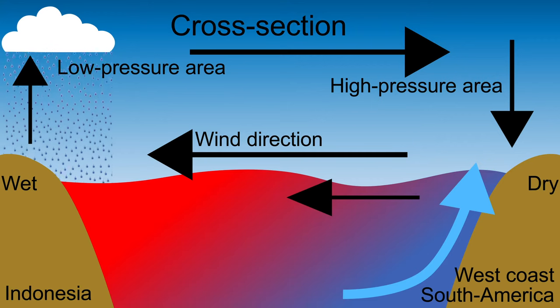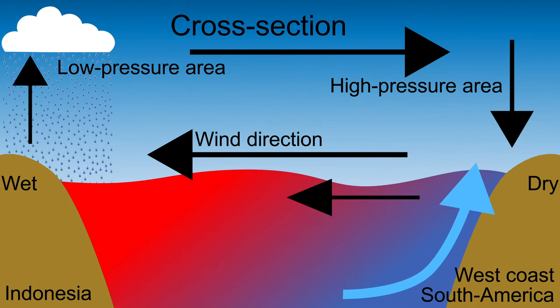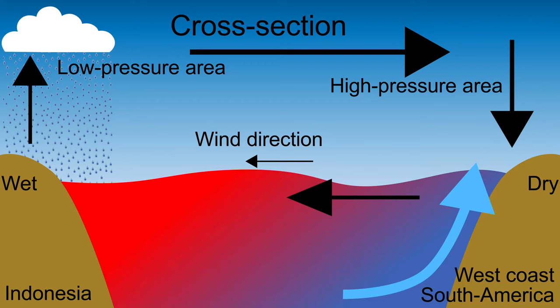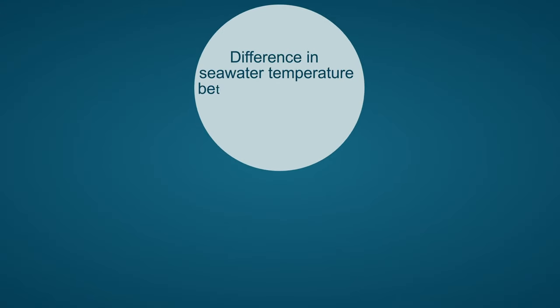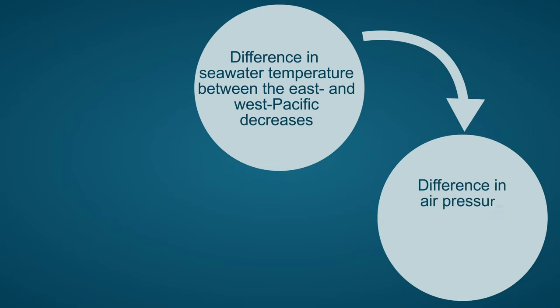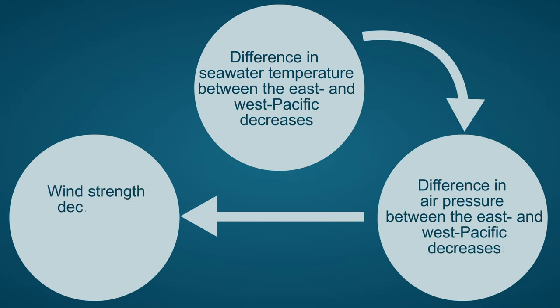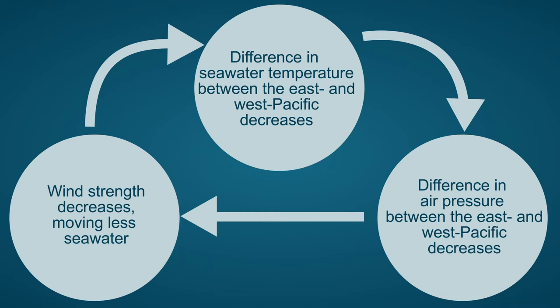Wind, air pressure and the temperature of the seawater reinforce each other. Suppose the wind decreases in strength. As a result, less warm seawater is blown towards the west, and less cold ocean water rises in the eastern Pacific Ocean, making it less cold. The difference in temperature between the western and eastern parts of the ocean decreases. Because warm seawater creates low pressure and cold seawater creates high pressure, the difference in air pressure also decreases, so the wind becomes even less strong, and the temperature difference decreases even more.